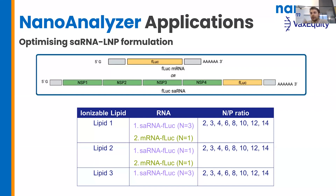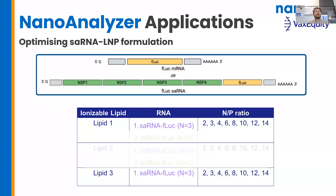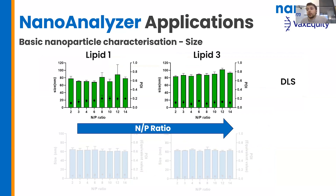I met George DeCroix at VaxEquity at a conference, and he was really interested in whether these new RNA species would interact differently with ionizable lipids and if we could determine this unique interaction. I'm going to share data from a panel where we're looking at two different ionizable lipids, and the formulations are generated with different MP ratios — different ionizable lipid to RNA ratios. The first thing to do is the conventional analysis. By DLS, we can see that the particles are of a nice size, formulated on the Ignite system, with no real trend in size with the MP ratio. The orthogonal nanoflow cytometry data similarly shows no trend in size.